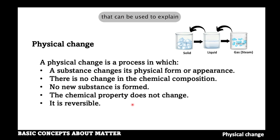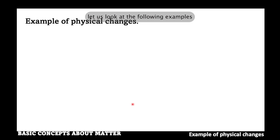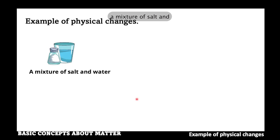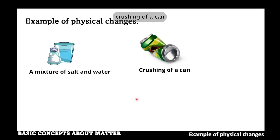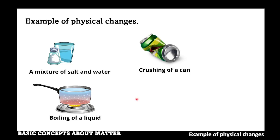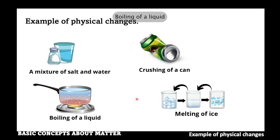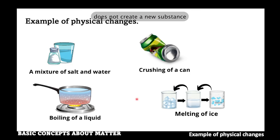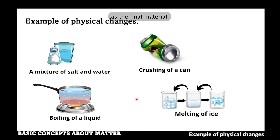Here are examples of physical changes: a mixture of salt and water, crushing of a can, boiling of a liquid, and melting of ice. Each of these examples does not create a new substance, as the starting material remains the same as the final material.